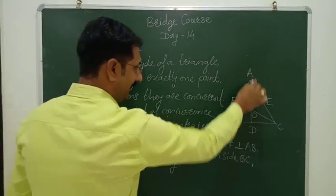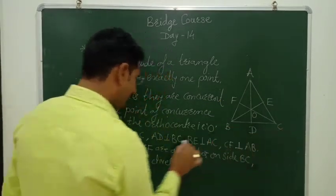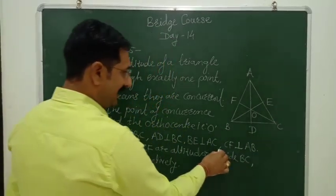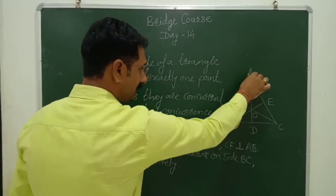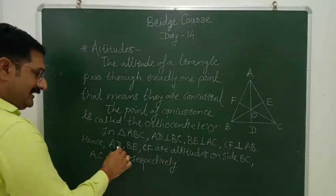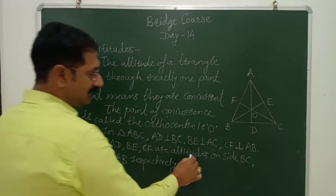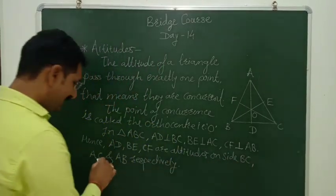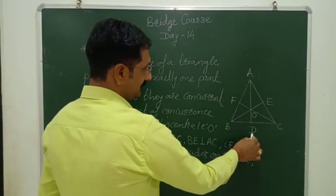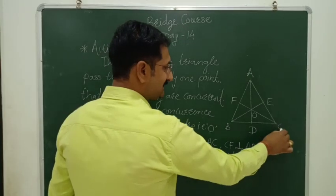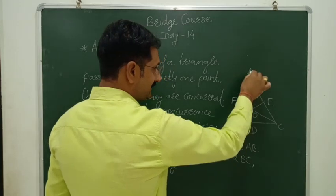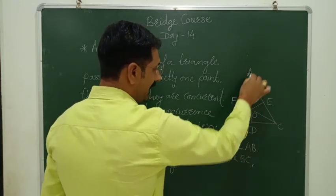Segment AD is perpendicular to segment BC. Similarly, segment BE is perpendicular to segment AC, and segment CF is perpendicular to segment AB. From this, it is clear that AD, BE, and CF are the altitudes on sides BC, AC, and AB respectively. So segment AD is on BC, segment BE is on AC, and segment CF is on AB.